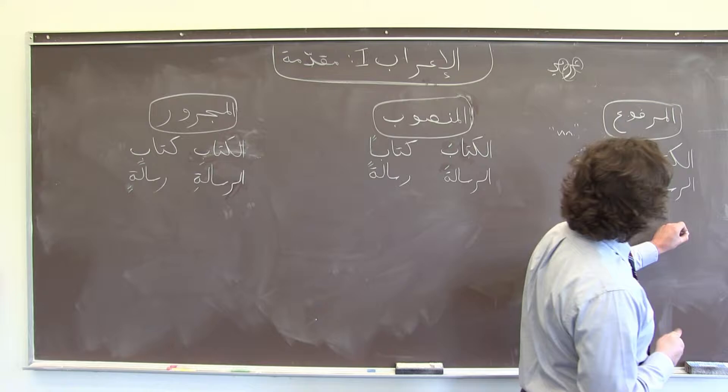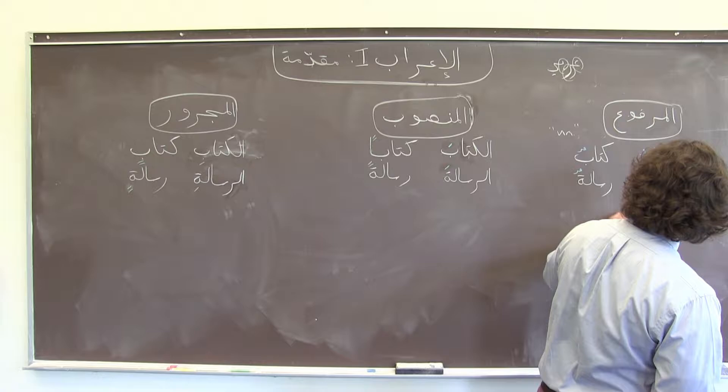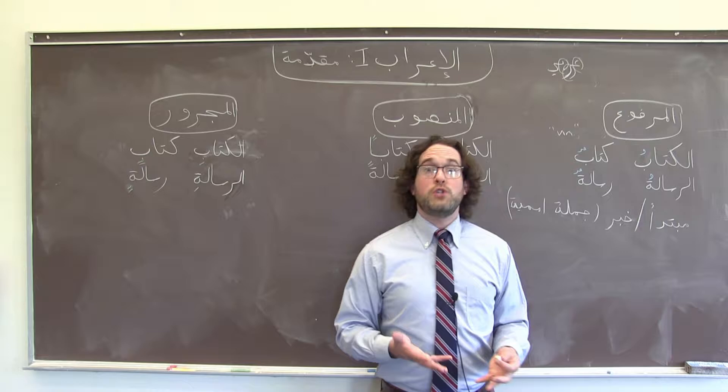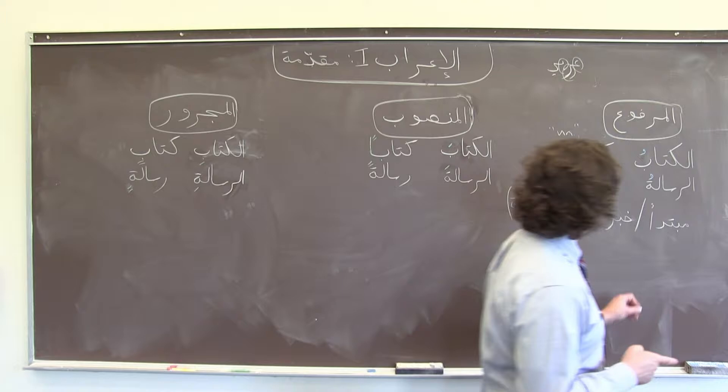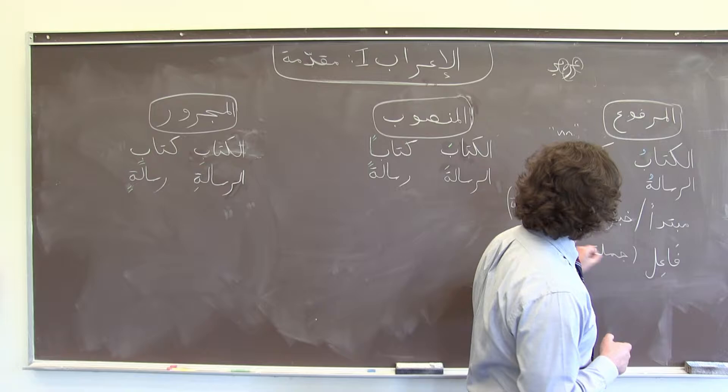So that means the subject and predicate of a nominative sentence, a جملة إسمية — what we call the مبتدأ and the خبر of a جملة إسمية. Also the فاعل, the subject of a verb — if there are no other factors that make us change the case, the فاعل, literally the doer of the verb in a جملة فعلية, is going to be مرفوع.